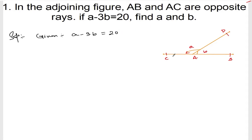We know AB and AC are opposite rays. So since AB and AC are opposite rays, angle CAD plus angle DAB must be equal to 180 degrees.